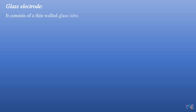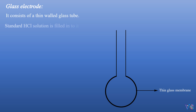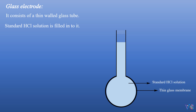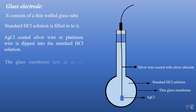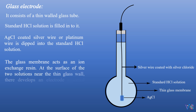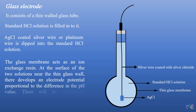The glass electrode consists of a thin-walled glass tube. Standard HCl solution is filled into it. A AgCl-coated silver wire or platinum wire is dipped into the standard HCl solution. The glass membrane acts as an ion exchange resin. At the surface of the two solutions near the thin glass wall, there develops an electrode potential proportional to the difference in the pH value. There will be equilibrium between the Na⁺ ions of the glass and H⁺ ions in the solution.